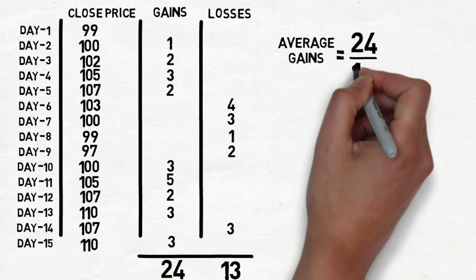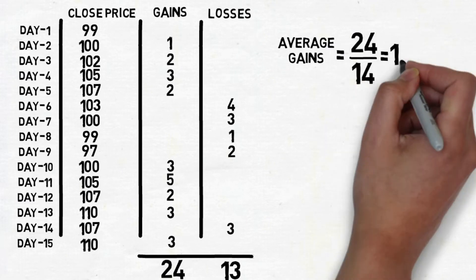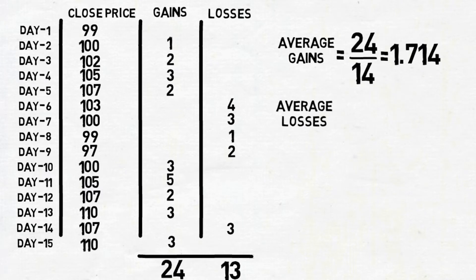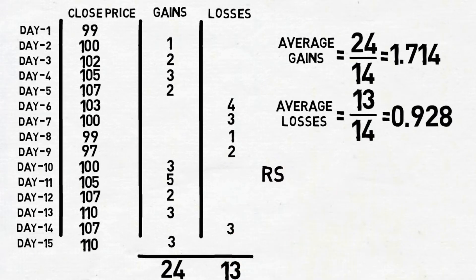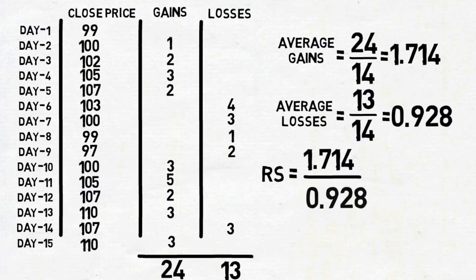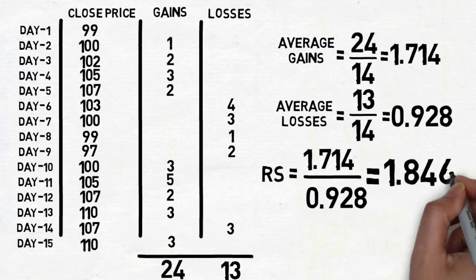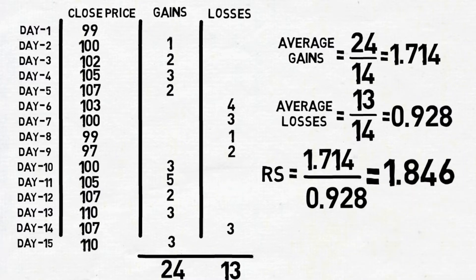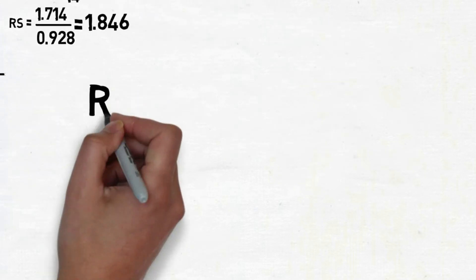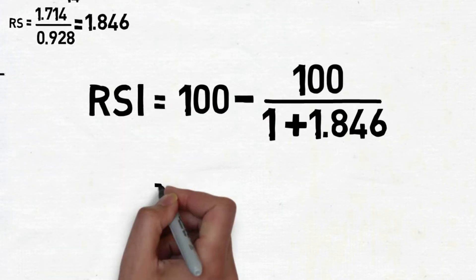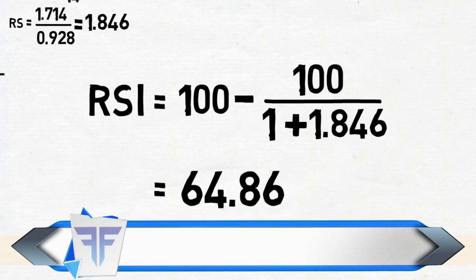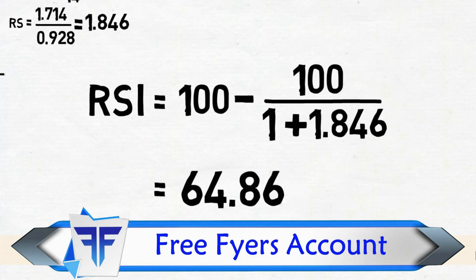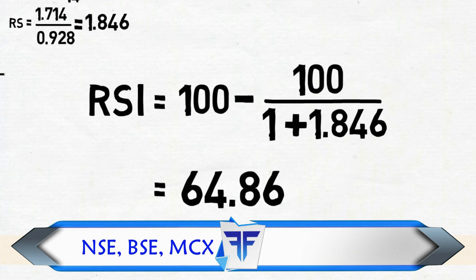Average Gains equals 24 divided by 14, which is 1.714. Average Loss equals 13 divided by 14, which is 0.928. RS (Relative Strength) equals 1.714 divided by 0.928, which is 1.846. So RSI equals 100 minus 100 divided by (1 plus 1.846), which gives 64.86. On the 15th day, when the script closes, the RSI is 64.86.